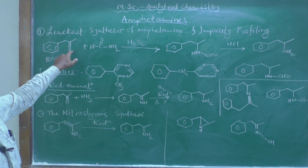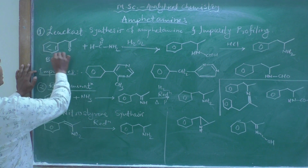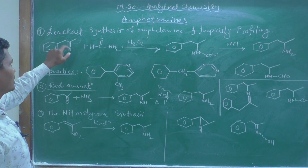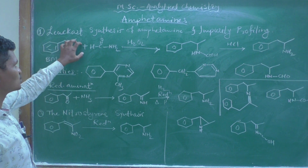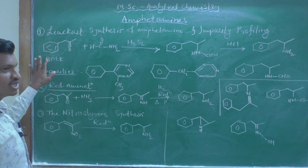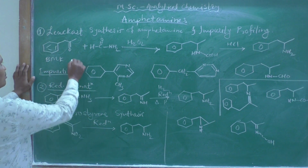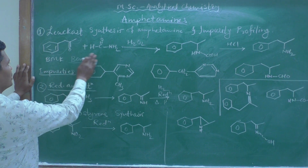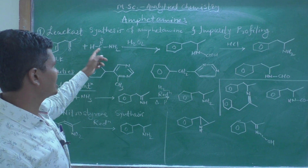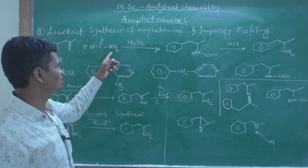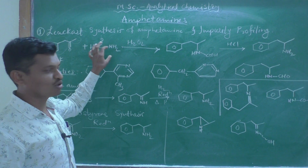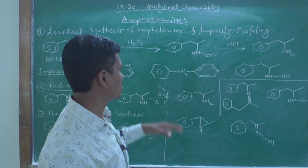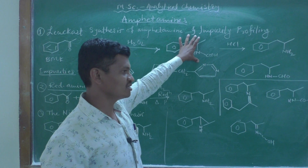The starting material is BMK, that is benzyl methyl ketone. This is a ketone moiety — the benzyl group on one side, the methyl group on the other, and a carbonyl group in between these two alkyl and aryl groups. So the name is benzyl methyl ketone — B-E-N-Z-Y-L, not benzene. Benzyl methyl ketone reacts with formamide (HCO-NH2).